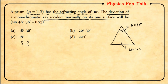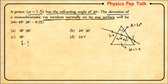The condition is that the ray is incident normally on one surface. When a ray is incident normally, it passes through the prism without any deviation at the first surface, so the angle of incidence I = 0 and angle of refraction r1 = 0. Then r2 becomes the angle of incidence for the second refracting surface, and the emergent ray makes angle of emergence e with the normal.